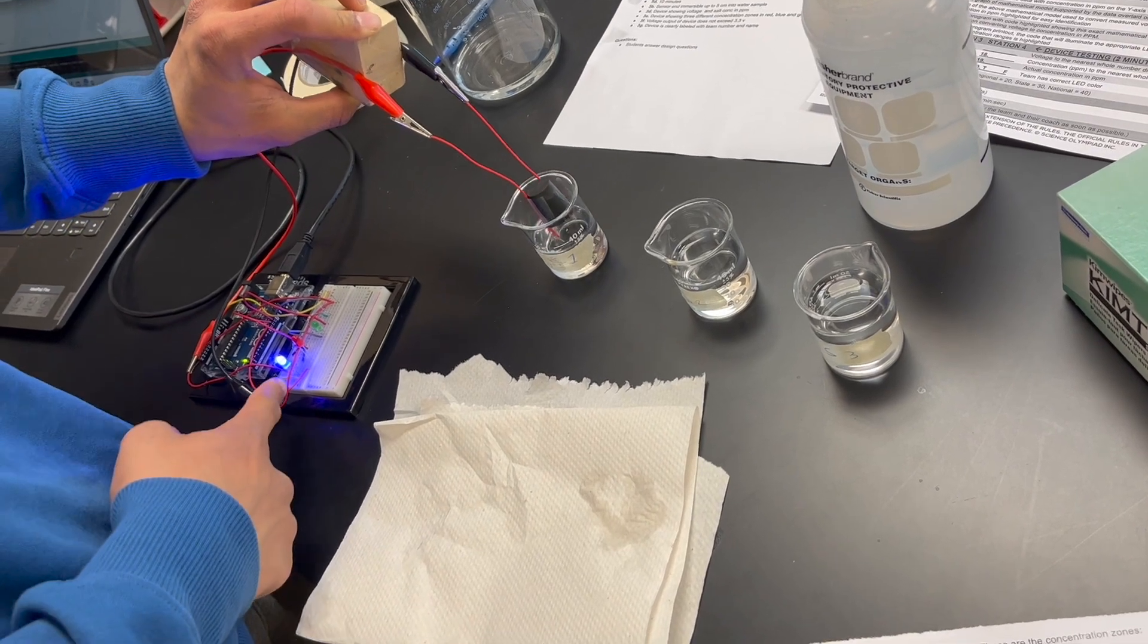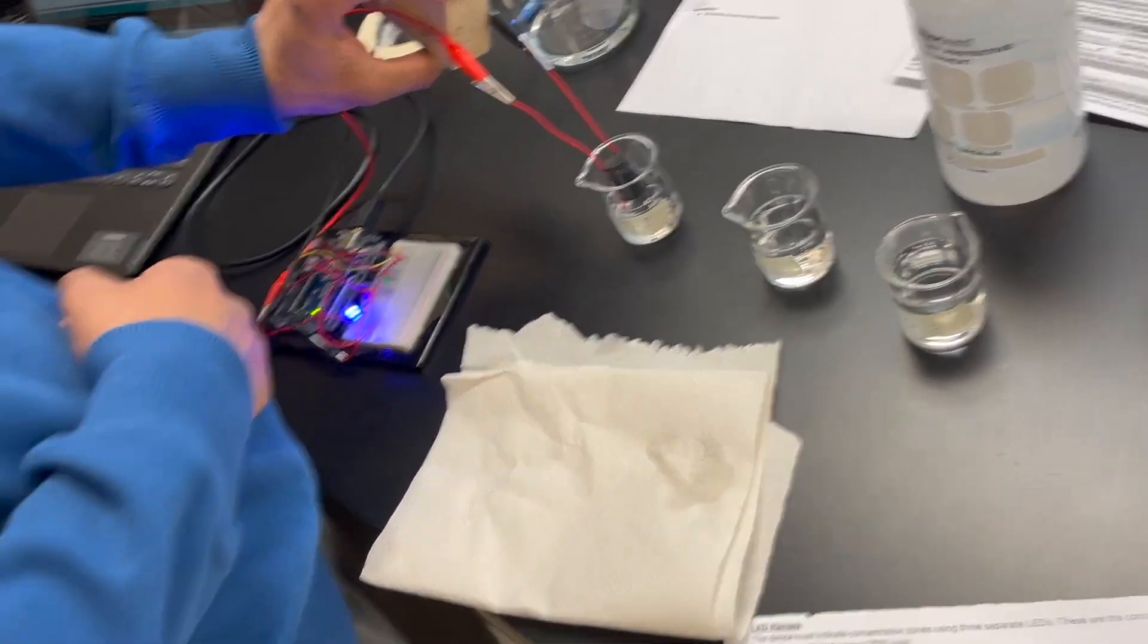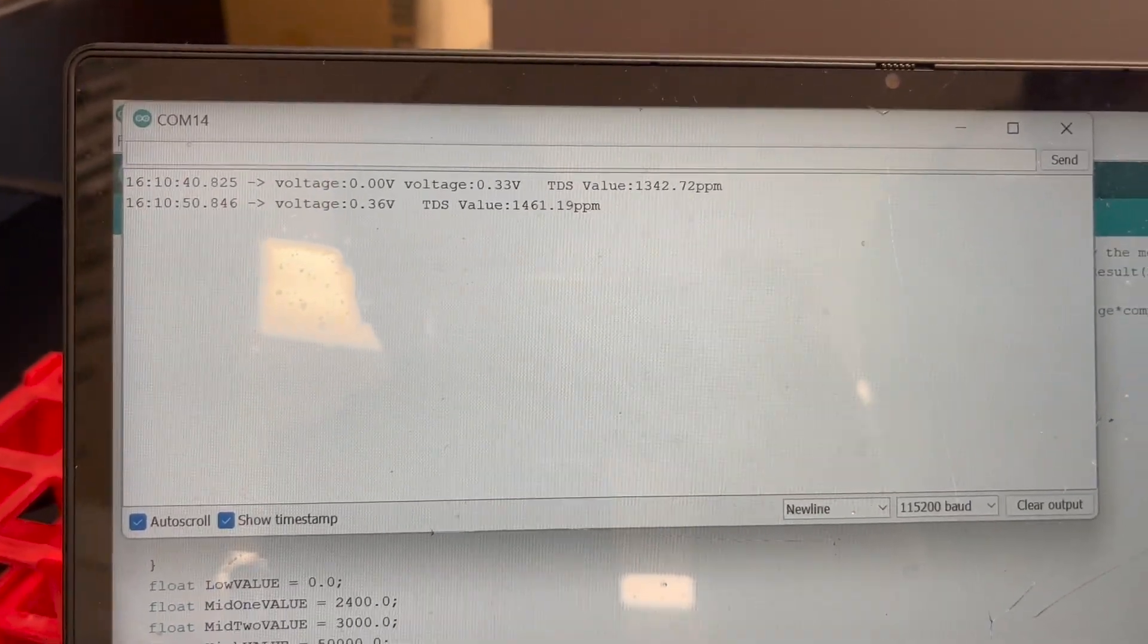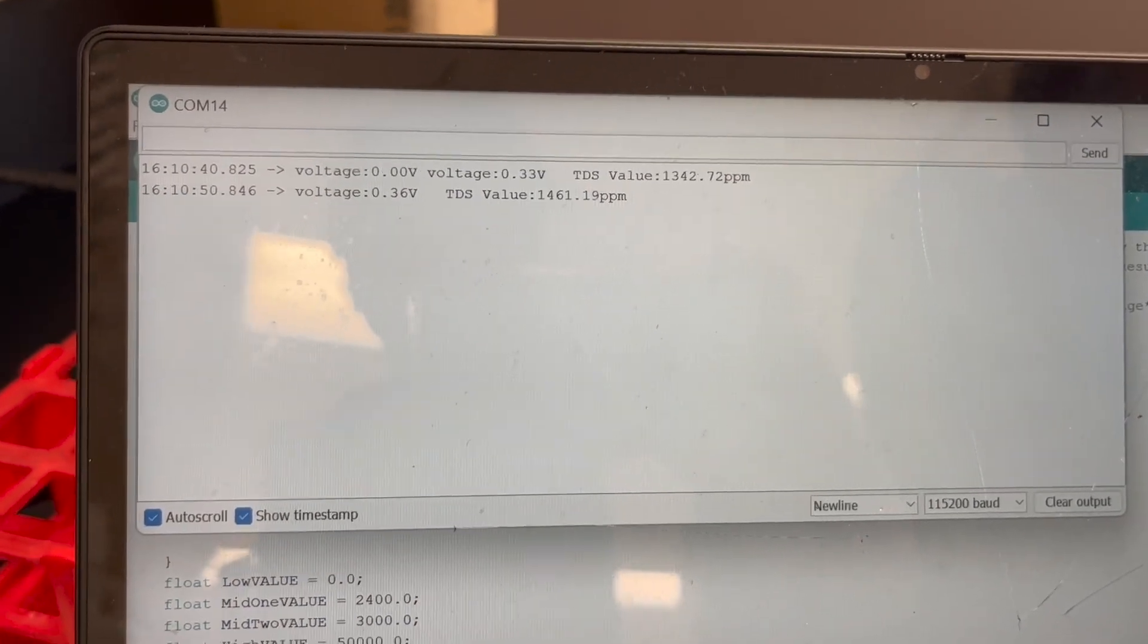All right. So blue LED, you can see that here and then he'll show you the reading. Okay. Okay, so we are getting 0.36 volts and a reading of 1461.19 ppm.